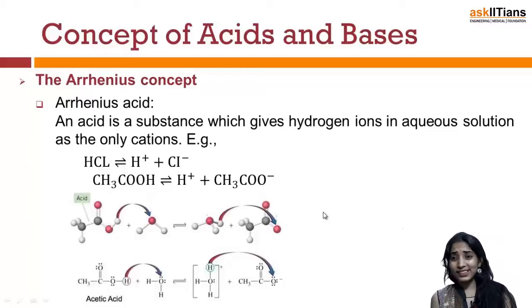Since we all know what an acid is and what a base is, there must be something which was given earlier because of which now we are able to know that this is called an acid and this is called a base. So let us now try to understand what were the concepts of acids and bases that were given to us.